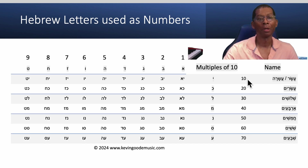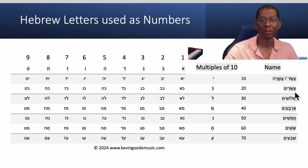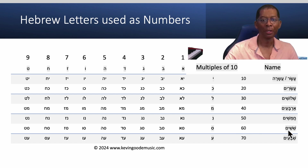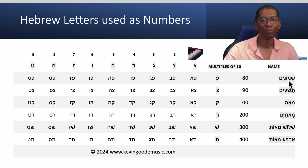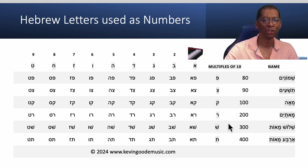So if we go back up, we already know ten: Eser and Esara. Next we have twenty, which is Esrim, and that's Kaf. Thirty: Shloshim, and that's Lamed. Forty: Arbaim, and that's Mem. Fifty: Chameshim, and that's Nun. Sixty: Shishim, and that's Sameh. Seventy is Shivim, and that's Ein. Eighty: Shmonim, and that's Peh. Ninety is Tishim, and that's Sadiq. A hundred is Mea, and that's Kuf. Two hundred is Mea-Taym, and that's Resh. Three hundred: Shlosh-Meot, and that's Shin. Four hundred: Arba-Meot, and that's Tav.